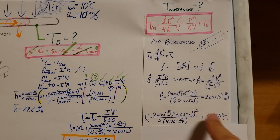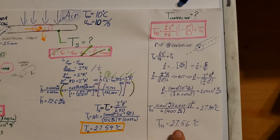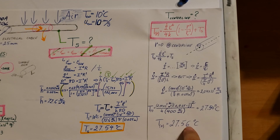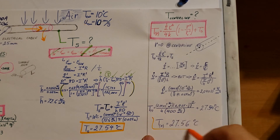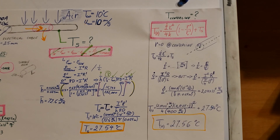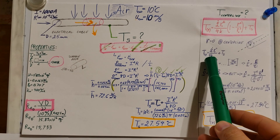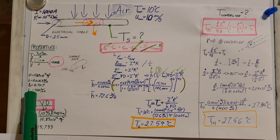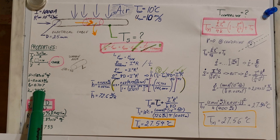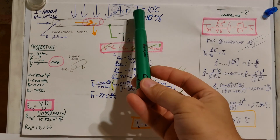With all values known, plugging into the centerline temperature formula gives 27.56 degrees Celsius — only 0.02 degrees different from the surface temperature. One important note: the k in this conduction formula is the thermal conductivity of copper, since we're told to assume the wire is solid copper. Don't confuse this with the k used for air in the convection calculation.